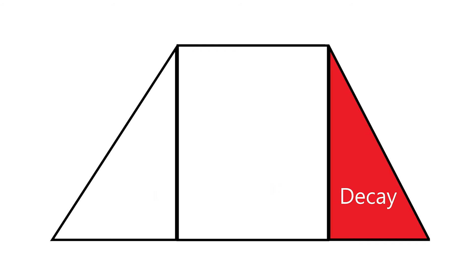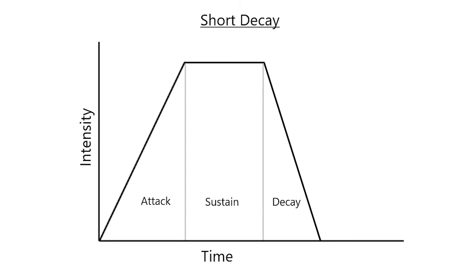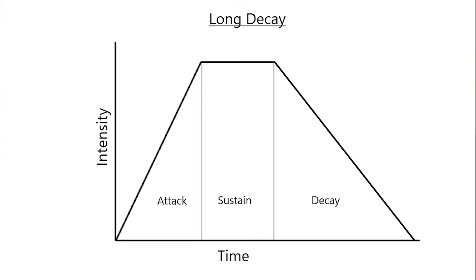Decay is the duration of time it takes a note to fall from its sustained intensity to silence. Most percussion instruments have a short decay time, and the intensity of the note quickly falls after the sustain period ends. Even if an instrument has a long sustain time, it can still have a short decay time — for example, a violinist could play a long sustained note and then abruptly end it. Cymbals are an example of an instrument with a long decay time; after the initial strike, the intensity slowly falls until completely silent, though a musician could significantly decrease the decay time by silencing it with their hand.